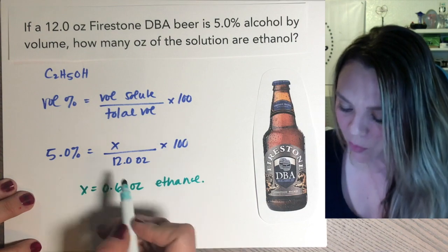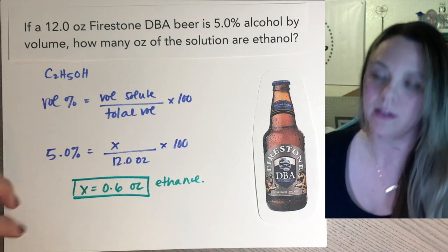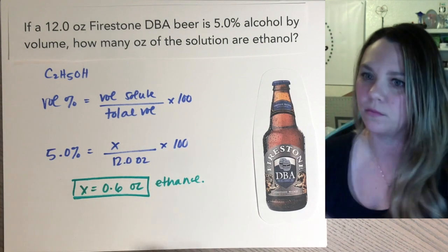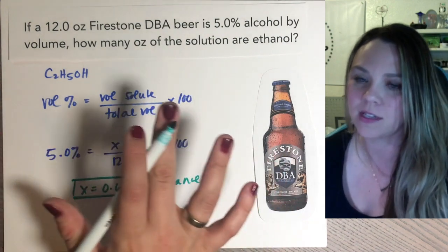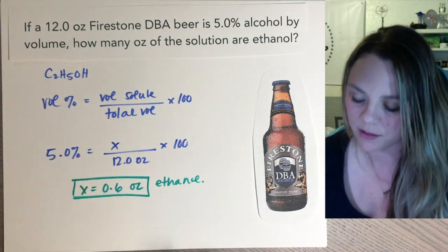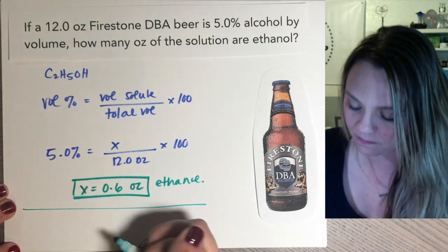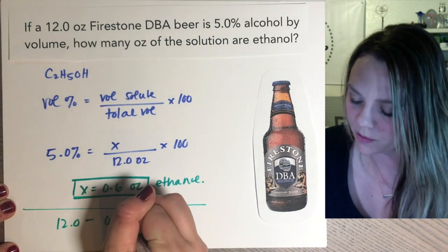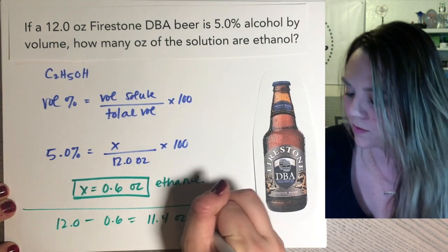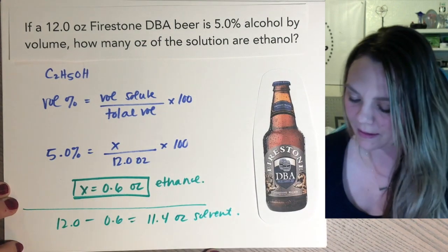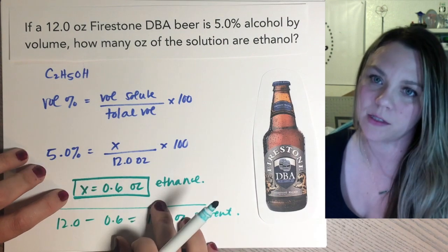So 0.6 ounces of this whole 12-ounce drink is actually the alcohol that you drink. They might ask you a question like how much of this is actually the solvent, which is easy. You just take 12 — your total — minus 0.6 of your solute, and you find that you have 11.4 ounces of your solvent. Out of this whole 12-ounce beer, only 0.6 ounces of that is actually ethanol.